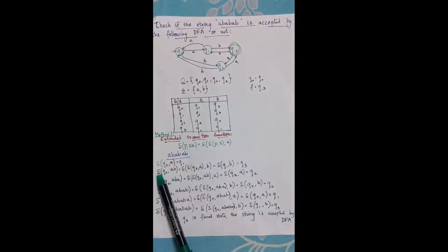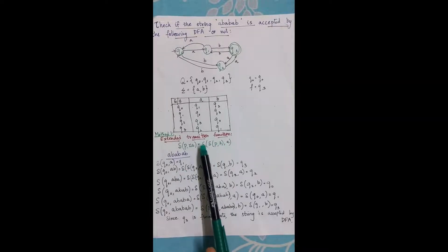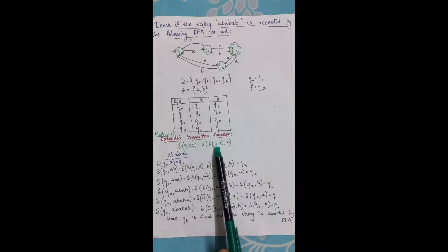Now I will consider two alphabets at a time. Delta q0 comma ab is equal to, applying this particular rule, delta of delta of q0 comma a comma b.